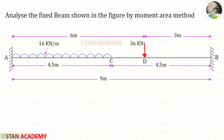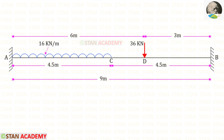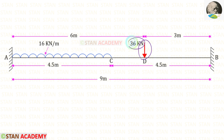Hello everyone. Today we are going to analyze a fixed beam using the moment area method. The span of the beam is 9 meters. There is a uniformly distributed load of 16 kilonewton per meter acting on the left half. There is also a point load of 36 kilonewton acting at a distance of 6 meters from the left support.